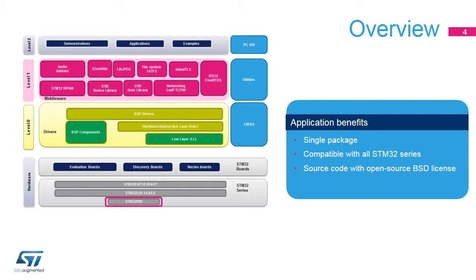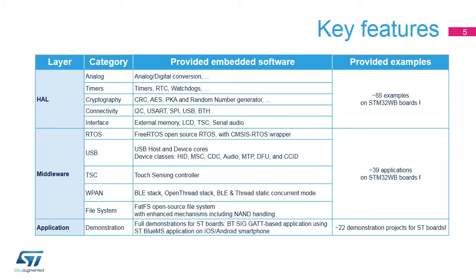Embedded software initialization code can be generated through STM32 Cube MX, allowing the customer to remain focused on the core application code. The STM32 Cube Package is a complete embedded software offer that ensures maximum portability between all STM32 series through three software layers: HAL, Middleware, and Applications. The HAL layer provides an API for STM32 embedded peripherals from analog to connectivity and cryptography to graphical categories. A rich set of examples is available to help developers start using the HAL and the product.